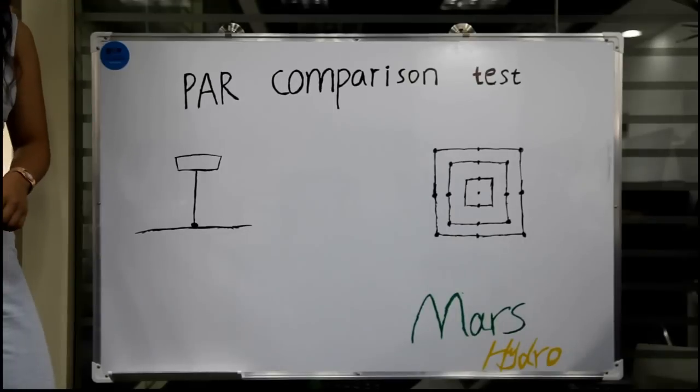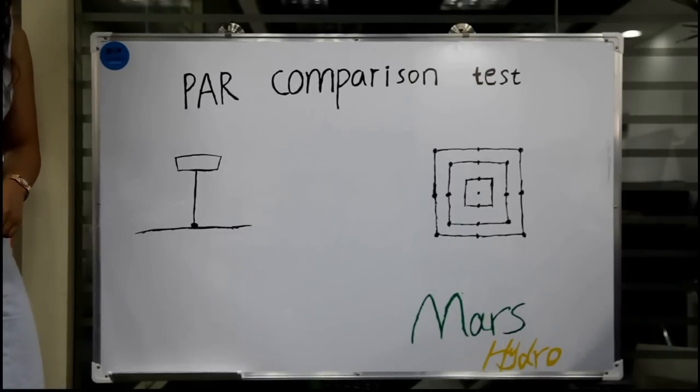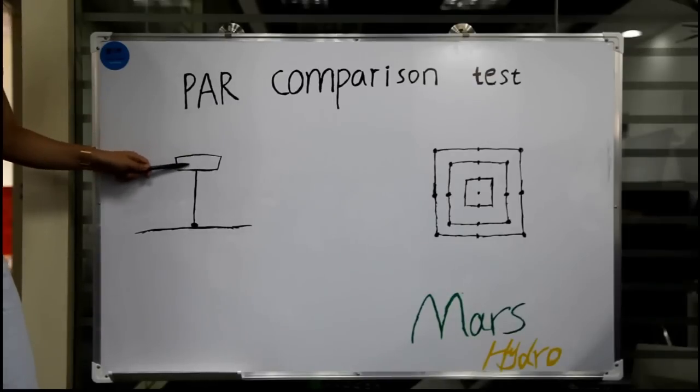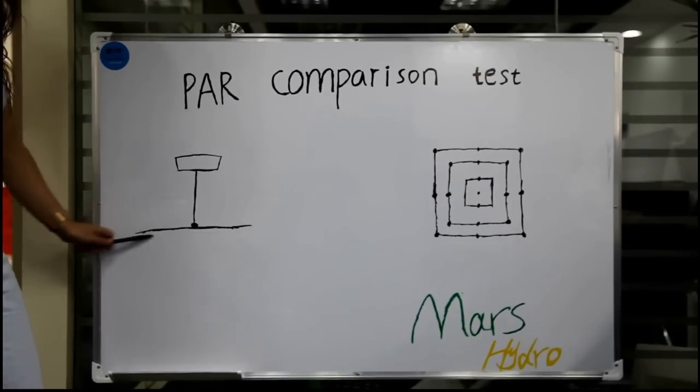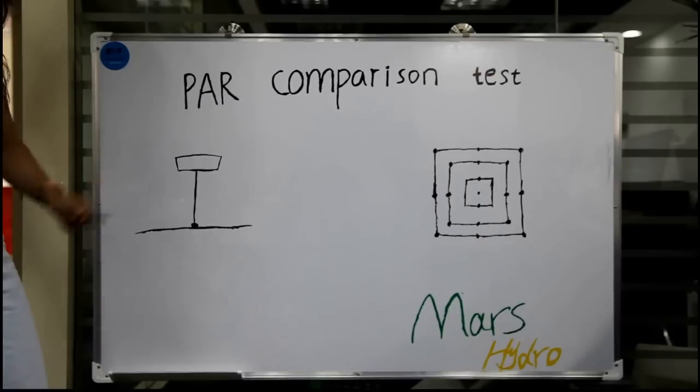PAR is a very key indicator that you guys need to pay attention to. This is the light, you can see this is the ground. Drag it down, here is the center point.